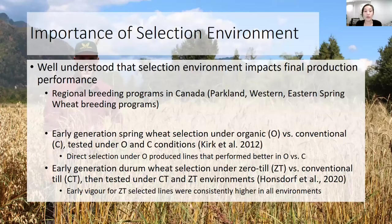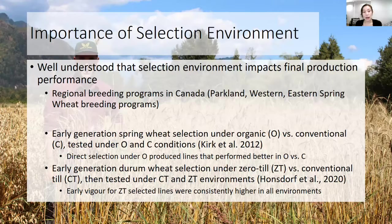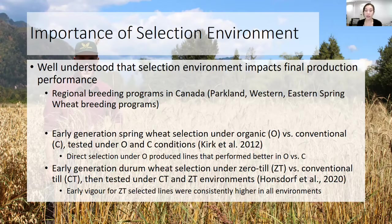To tie the phosphorus conundrum and organic participatory plant breeding together, I want to talk about the importance of selection environments. It's well understood that the selection environment in which early generation crops are tested and selected impacts the final production performance. For example, we have regional breeding programs in Canada. There's also research showing that early generation spring wheat selected under organic versus conventional conditions, and then tested under both, showed that organic lines produced better under organic. There's also research on early generation durum wheat selection under zero-till, where early vigor for zero-till selected lines was consistently higher in all environments.